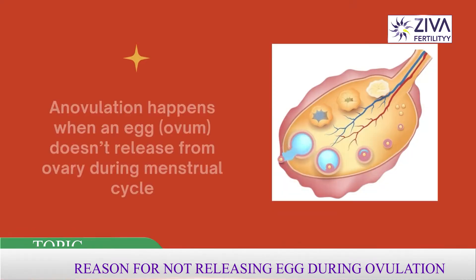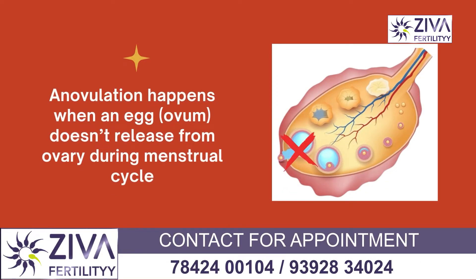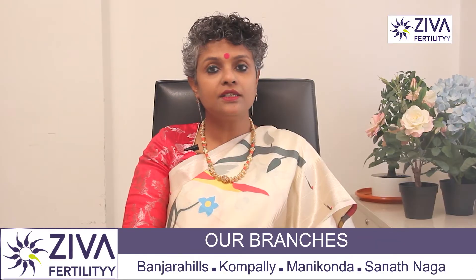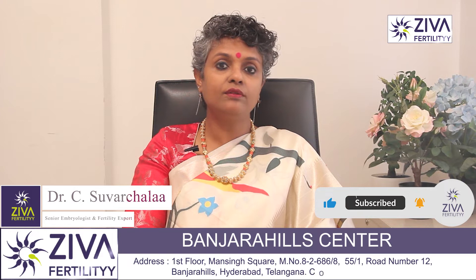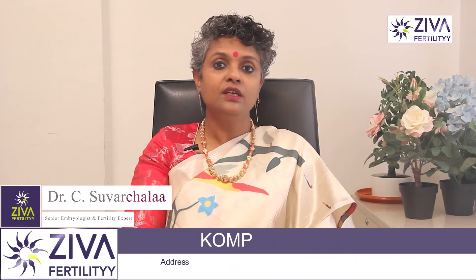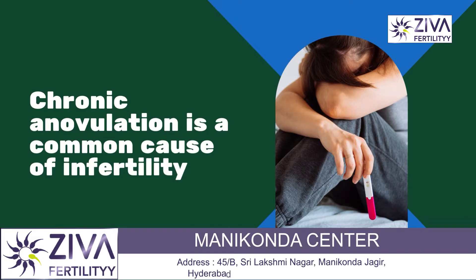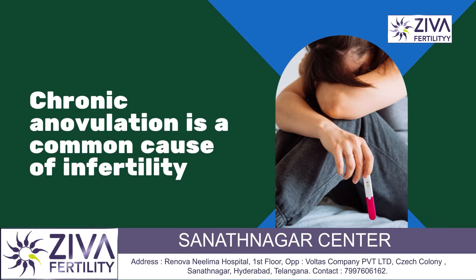Anovulation happens when an egg, also called an ovum, doesn't release from your ovary during your menstrual cycle. An egg is needed to have a pregnancy. Since multiple hormones are involved in ovulation, there are many causes of anovulation. Chronic anovulation, which means it occurs many times, is a common cause of infertility.